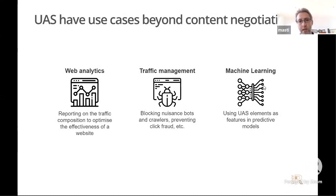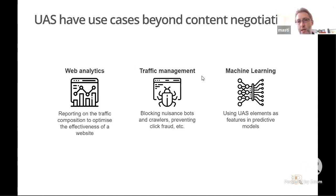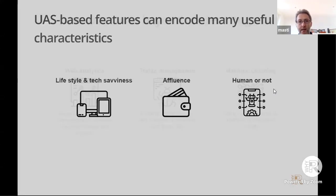Because of this rich information, user agent strings have found many use cases beyond content negotiation. They are heavily used in web analytics for reporting on traffic composition to optimize website effectiveness. They're also used in traffic management — for example, blocking nuisance bots and crawlers, and preventing click fraud, which is a huge problem in the advertising industry. Interestingly, one can also use user agent strings in predictive models, which is what my talk is about.